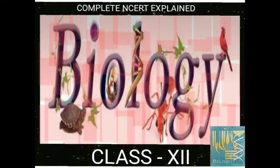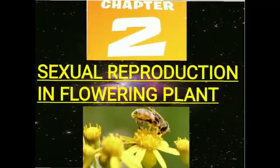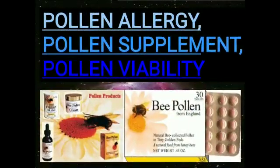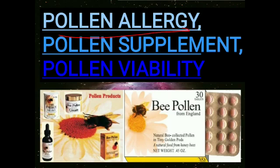Hello students, we are back with the next video of class 12th biology, Chapter 2: Sexual Reproduction in Flowering Plants. In the last video, we talked about pollen grains — what they are and their structure. In this video, we are going to talk about pollen allergy, pollen supplements, and pollen viability.